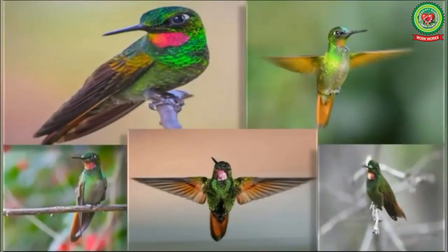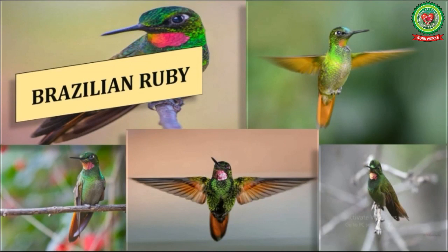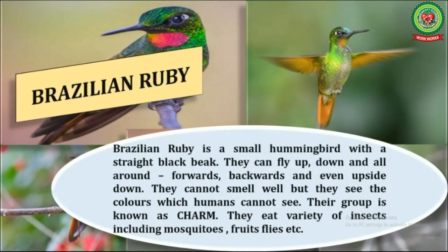The last one is the Brazilian Ruby. The Brazilian Ruby is a small hummingbird with a straight black beak. They can fly up, down, and all around — forwards, backwards, and even upside down. They cannot smell well, but they can see colors which humans cannot see. Their group is known as a charm. They eat a variety of insects including mosquitoes, fruit flies, etc.